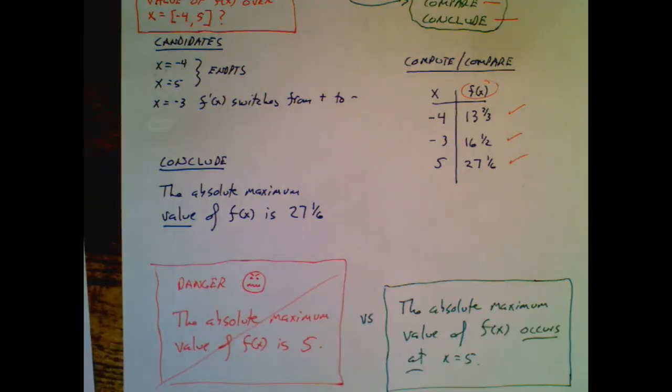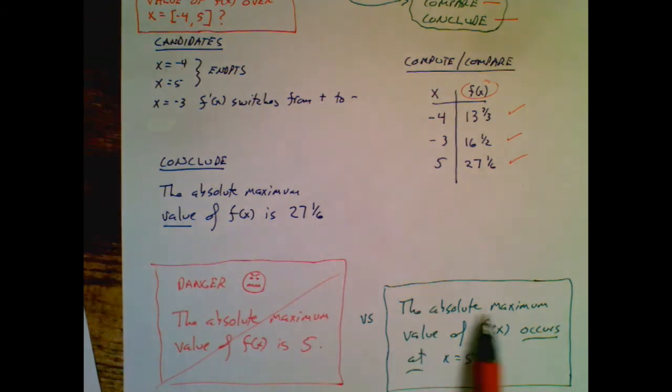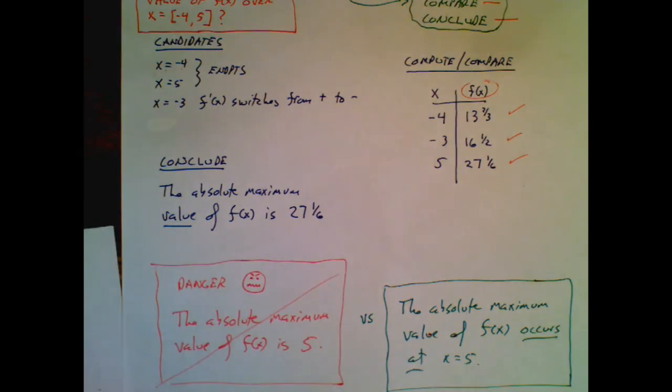Sometimes they will ask you a question like, at what x value does the maximum value occur? In which case we wouldn't answer with the y value. We would say the absolute maximum value of f(x) occurs at x equals 5. And it led to a y value of 27 and a 6.